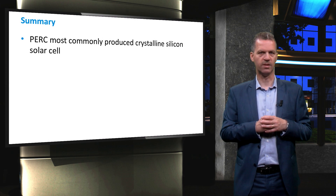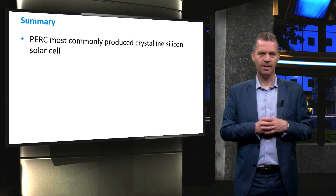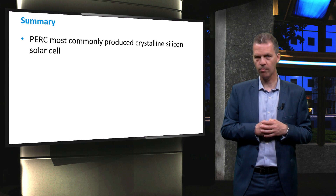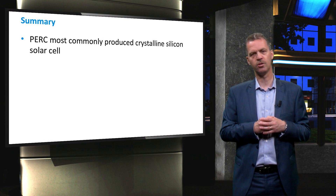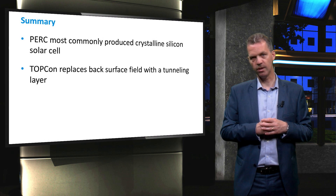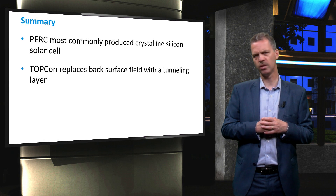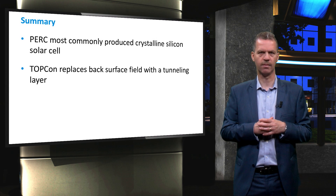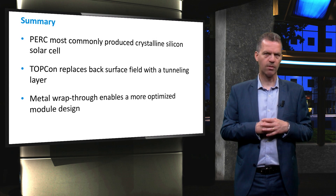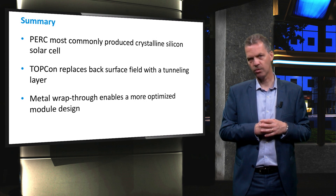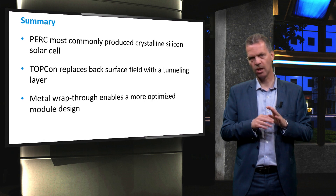To conclude this video, we have seen that derived from the PEARL design, the PERC is the most commonly produced multicrystalline silicon solar cell. The TOPCON design can replace the back surface field and localised contacts with an ultra-thin tunneling layer and full metallisation at the back. And finally, the metal wrap-through technology can be implemented for module optimisation, allowing the individual cells to be placed much closer to each other.